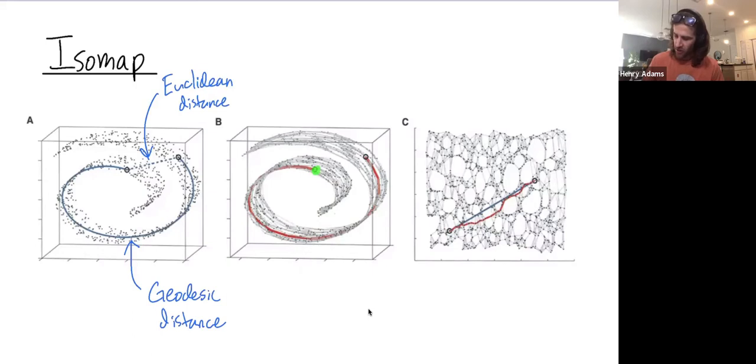Or around each data point you could draw a ball and then connect each data point by an edge to all of the other data points within that ball. So if you choose those parameters appropriately, you won't have this edge in your dataset.